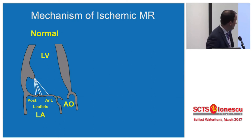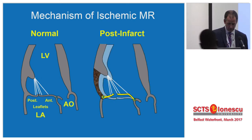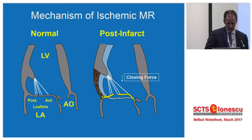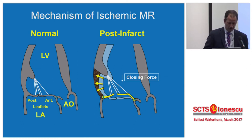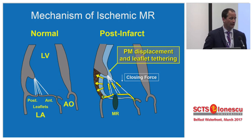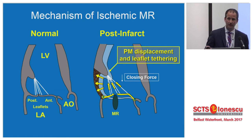Normal mitral valve function involves a balance between closing and tethering forces on the leaflets. After an infarction, you have decreased closing force because the left ventricle is not contracting as well. You have displacement of the posterior medial papillary muscle, resulting in leaflet tethering and distraction of the leaflets, which results in MR. The MR can then induce annular dilatation — unless the patient has atrial fibrillation, annular dilatation does not precede MR; it always follows MR.